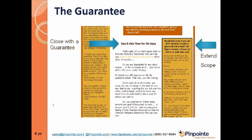I close with a guarantee: 'Use it risk-free for 90 days.' I also use a technique called a scope extender. This course is aimed at people who want to get rich using internet marketing — but not everybody reading it needs money. Some might already be multi-millionaires. The scope extender says: even if you're a multi-millionaire, you might still want this — and explains why. It lets you capture people outside your primary market.